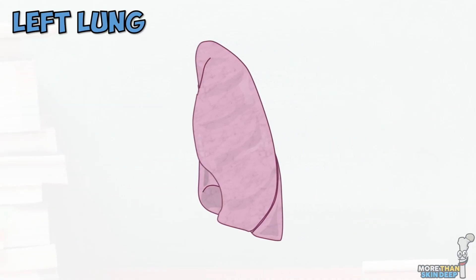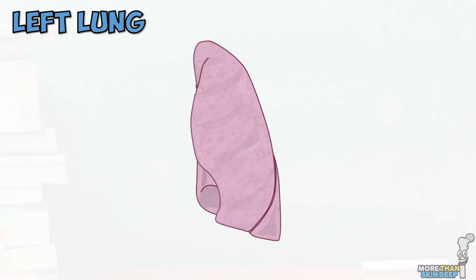You may occasionally see this part of the left lung referred to as the lingula, which is part of the superior lobe, but is functionally equivalent to the middle lobe of the right lung.